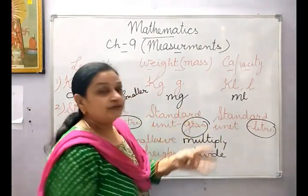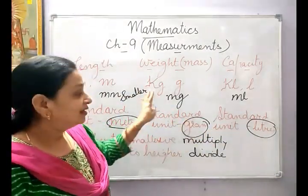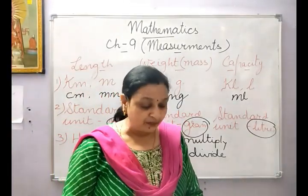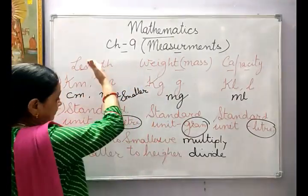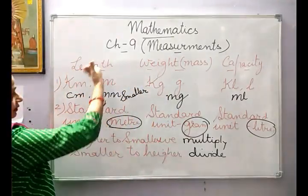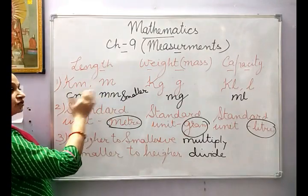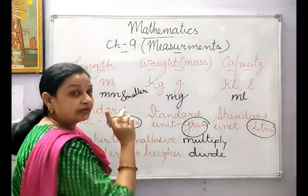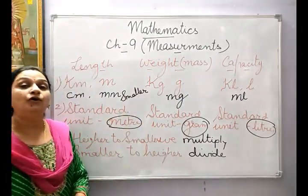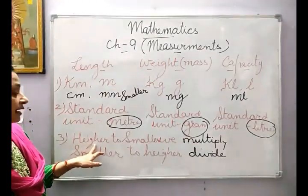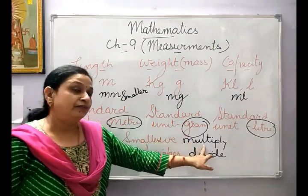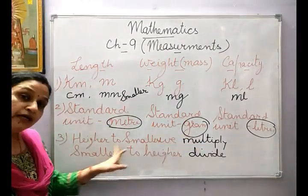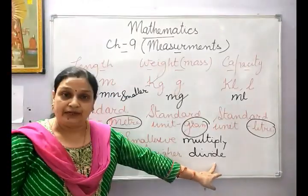You already know this but it was just a revision. One thing more — you can convert higher units into smaller and smaller units into higher units in any of these things, but you have to follow one rule: when we convert higher to smaller unit we multiply, and when we convert smaller to higher unit we divide.